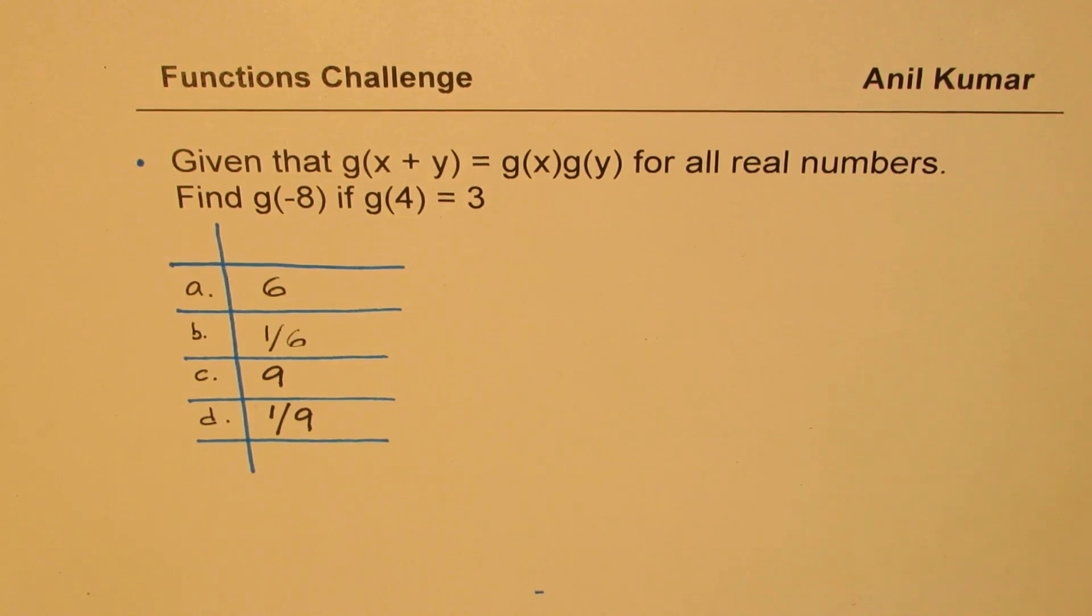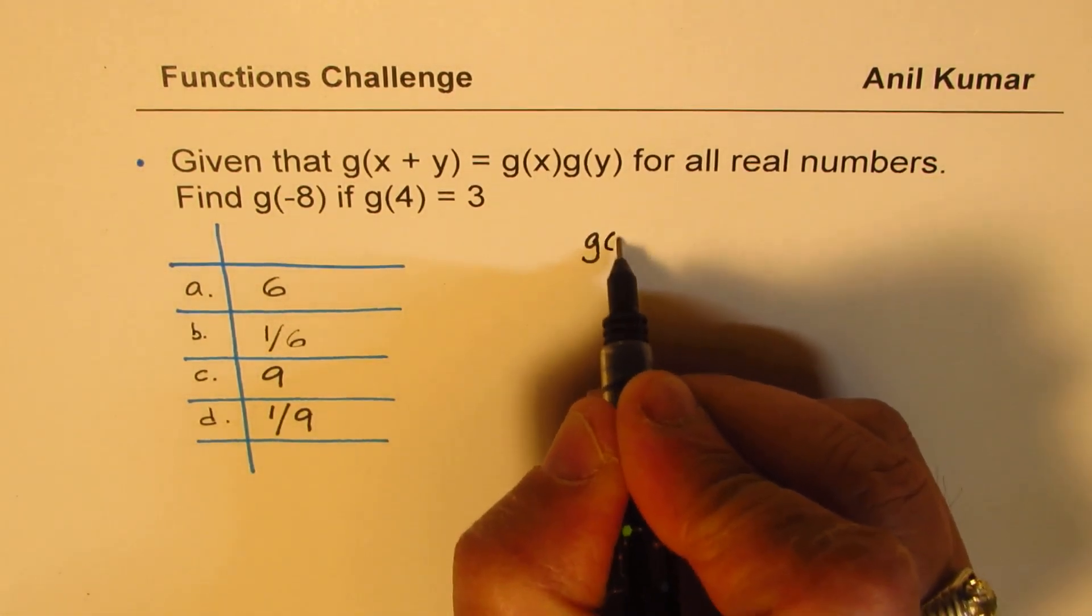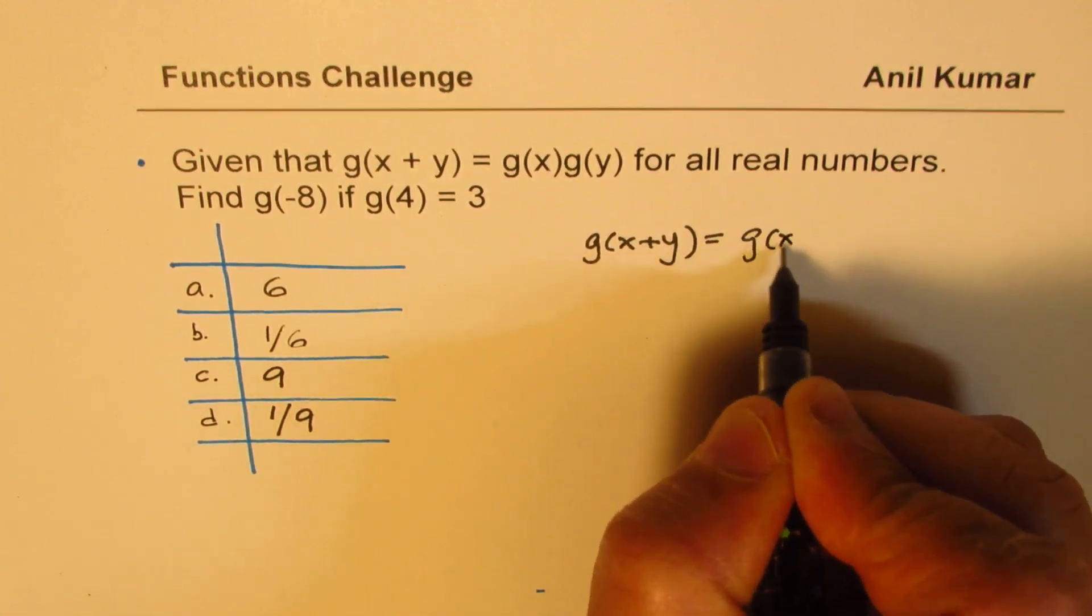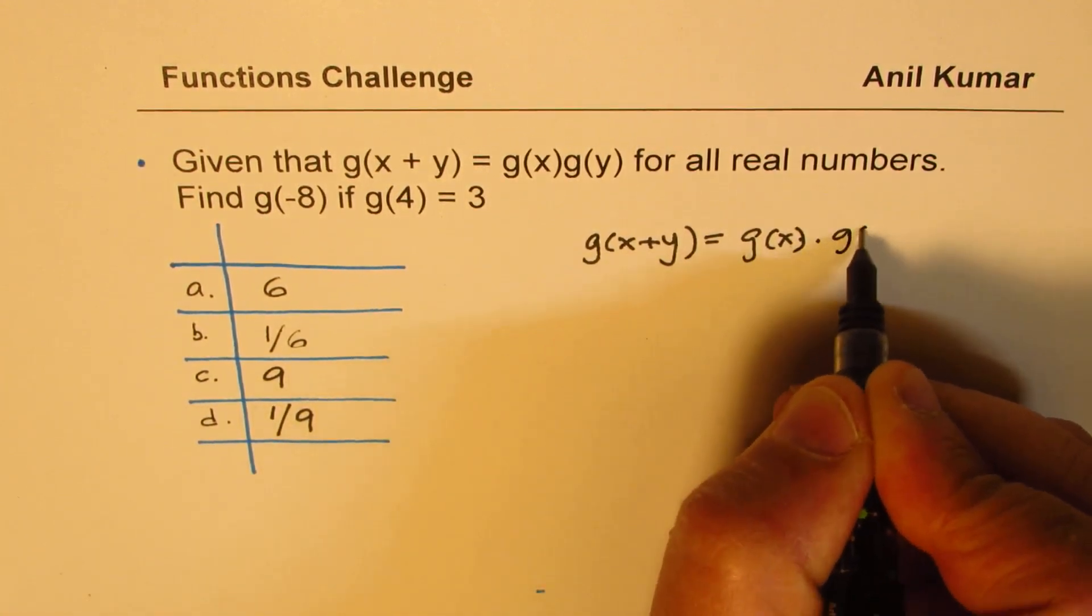OK, just think about it. Now, here is my solution. We are saying that for all numbers, g of x plus y is equal to the product of g of x and g of y.